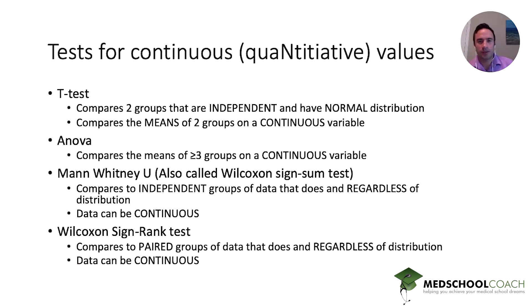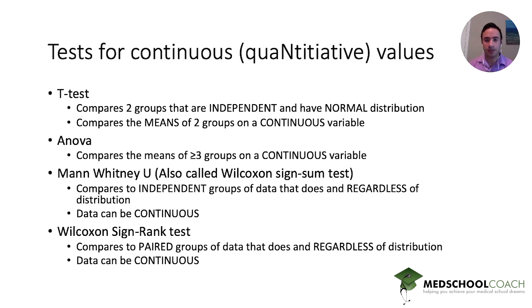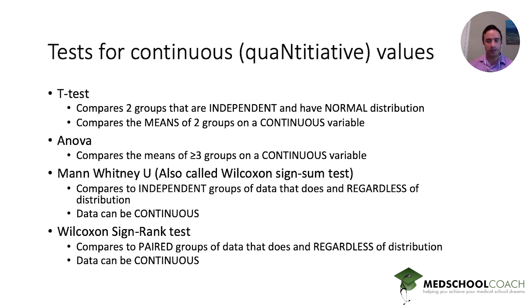For quantitative data, the t-test is something we've all heard about. It compares two groups that are independent and have a normal distribution, comparing the means of those two groups of a continuous or quantitative variable. For a t-test, remember you need three things: you're working with quantitative or continuous data, the two groups must be independent from each other, and you must assume a normal distribution. You won't be expected to perform the normality calculation on a test, but you should know its significance if the question states the data is normally distributed.